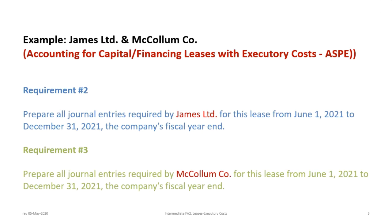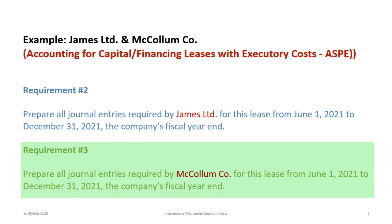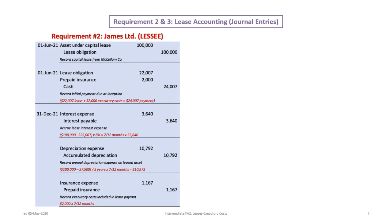Now we'll proceed with requirements 2 and 3 together. Requirement 2 will be to prepare the journal entries by James Ltd, the lessee, from June 1st 2021 to December 31st, the company's year end. Requirement 3 will be the journal entries for the lessor McCollum Company for the same period. On the date the lease is entered into, June 1st 2021, the lessee will debit the asset under capital lease and credit the lease obligation for the present value of $100,000.